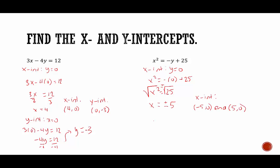Now we're going to find the y-intercept of the quadratic. To find the y-intercept, we plug in 0 for x. That gives us 0 squared equals negative y plus 25. 0 squared is 0, and then adding y to both sides gives us y equals 25. So the y-intercept is (0, 25).